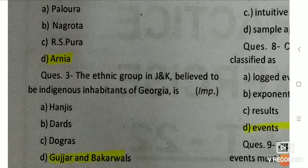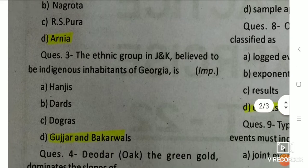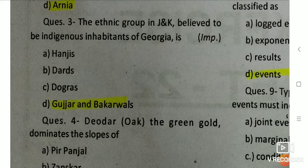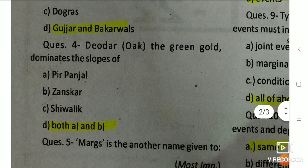This is an important question. Q3: The ethnic group in J&K believed to be indigenous inhabitants of Georgia is — the right answer is Gujjars and Bakarwals. The next answer is D, that is both A and B.